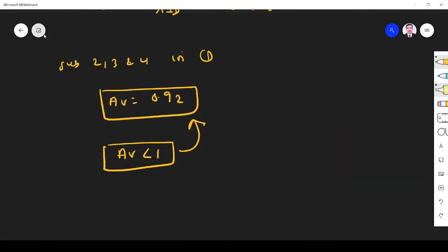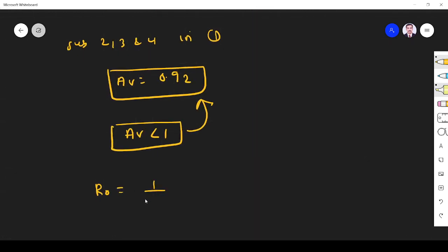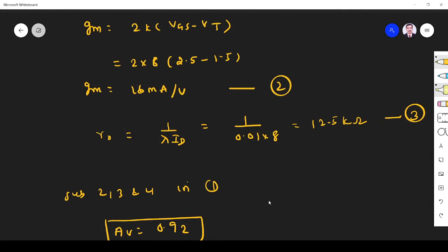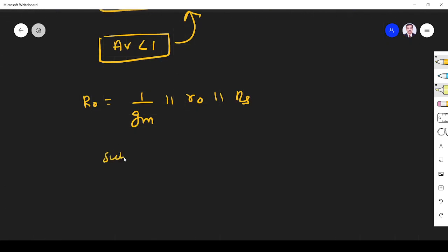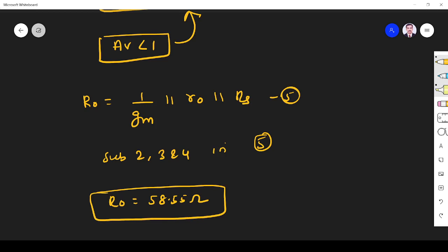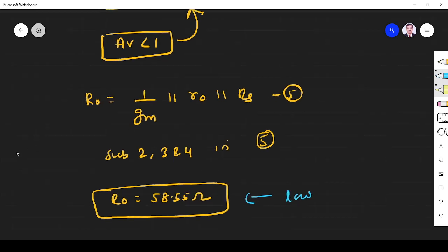Next, what they asked for? They have asked for output resistance. For common drain amplifier, output resistance is ro parallel Rs parallel 1 by gm. So gm we have, ro we have, Rs we know. So again we have to substitute. In final if we substitute we get is 58.54 ohms. So the output resistance of common drain amplifier is low.